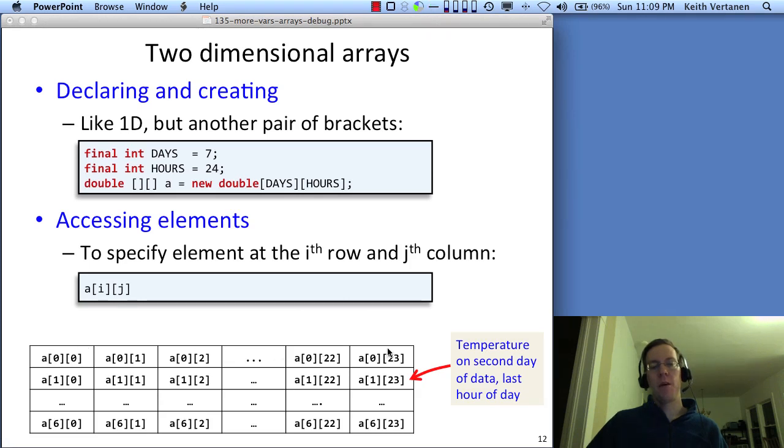That same grid of values, here are the index of this variable A. A bracket 0 bracket 0 would be, say, Sunday at midnight, then Sunday at 1am, Sunday at 2am, and so on. If I want Monday, then I put a 1 in that first index position. And if I want midnight, then I put a 0. Simple enough.